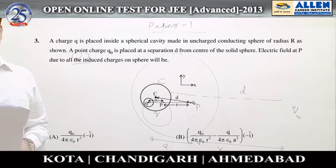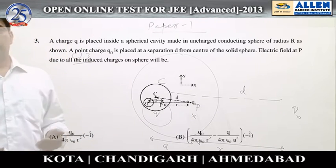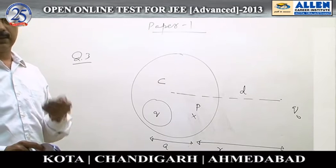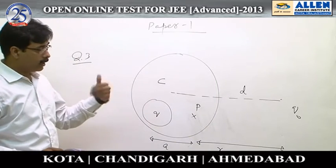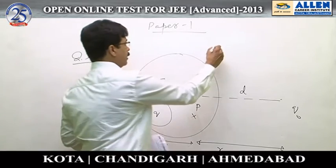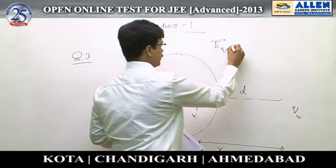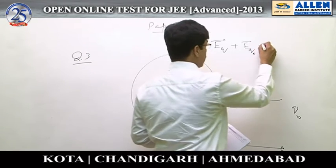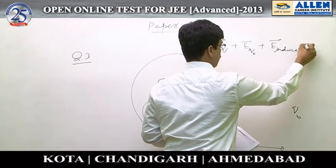In question number three, we are asked to find the field inside the material of a conductor. It is a property of conductors that the field inside the material is zero — the resultant field is zero. That means at point P, the field due to all charges — both the charges present as well as the induced charges — must be zero.